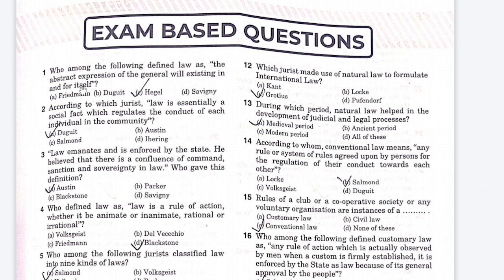The first question is: who among the following defined law as the abstract expression of the general will existing in and for itself? Options: Friedman, Duguit, Hegel, and Savigny. The right answer is Hegel.